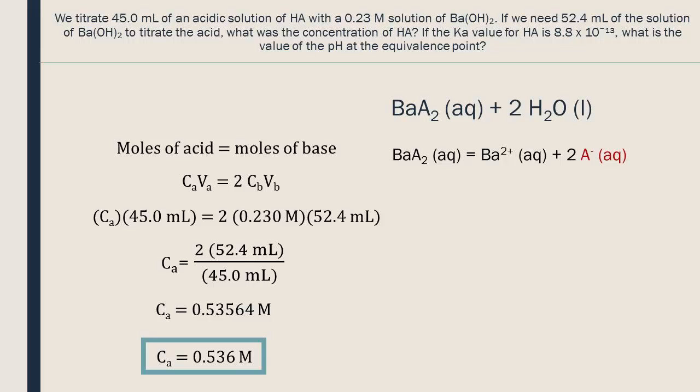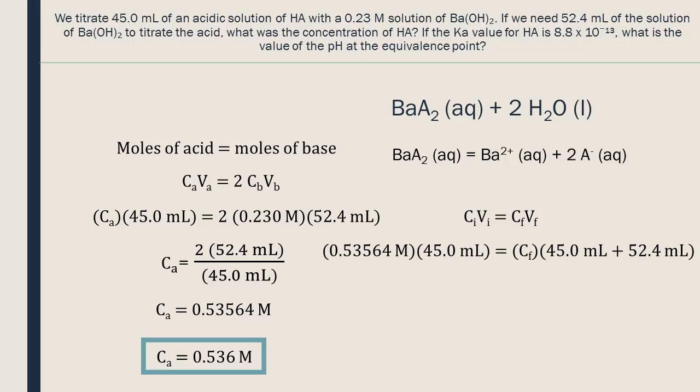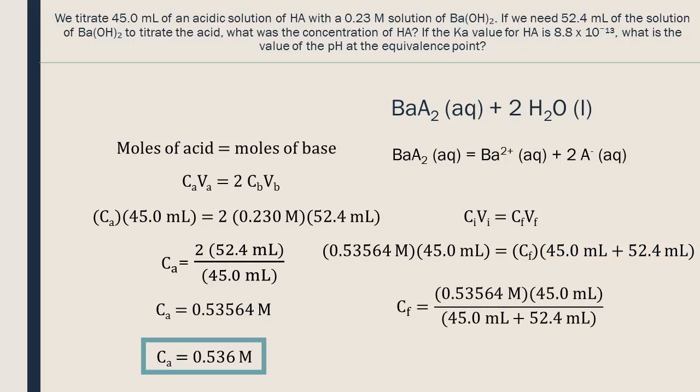We will make an ICE table. First, let's do the calculations for the dilution. Because 52.4 milliliters of base are added to the total volume of the solution, the initial concentration is diluted. However, there are still the same number of moles of solute before and after the dilution, so we can use this equation. We insert the concentration of the acid we just calculated, because at the equivalence point there are the same number of moles of A⁻ as there originally were of HA. We put in the answer with more significant digits to avoid rounding errors. The final volume is the volume of the acid plus the base added. This gives the concentration of A⁻ in solution at the equivalence point.